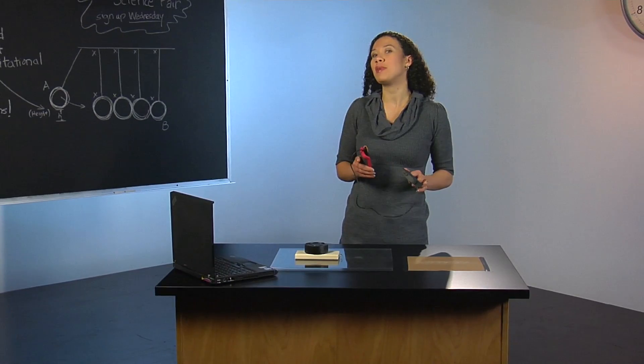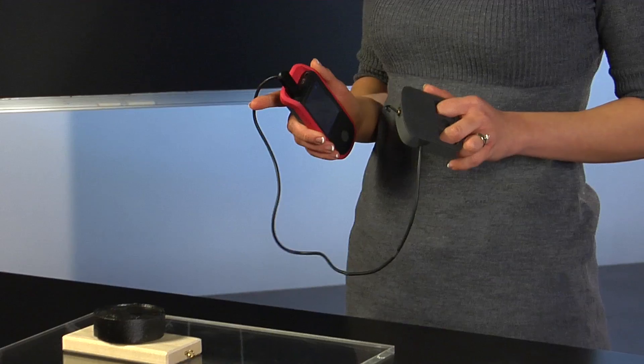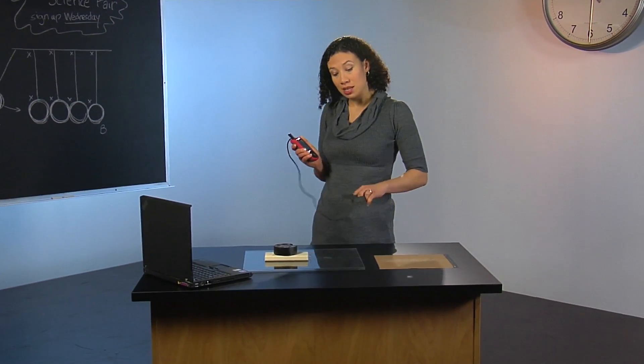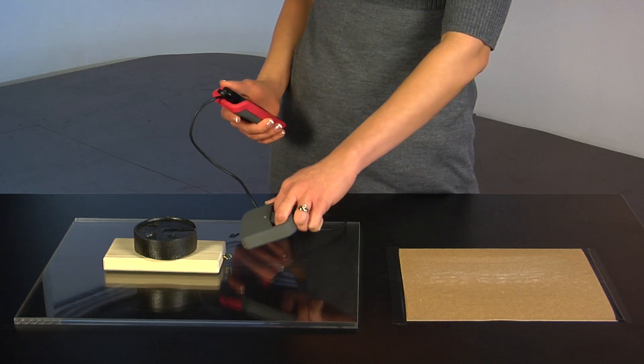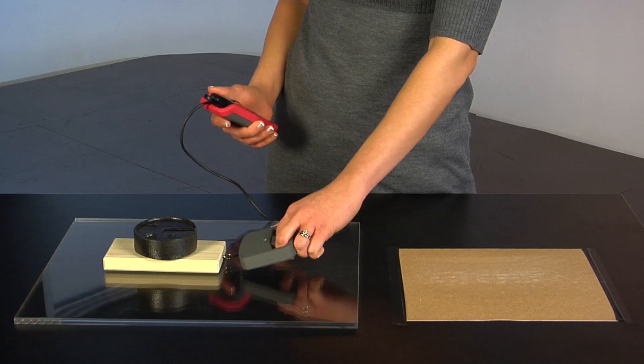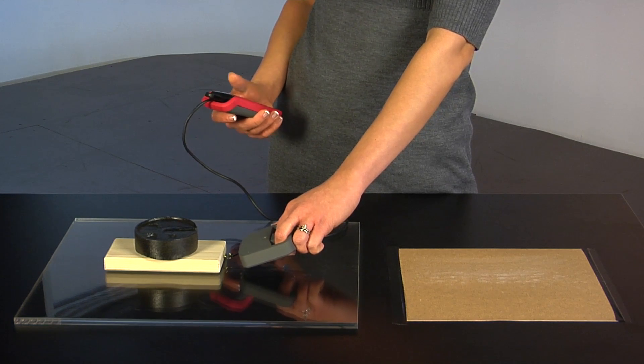We're showing friction by demonstrating the difference in force needed to pull a block across various surfaces. So, I'll start with the acrylic. Simply hook up the force sensor to the block, press record, and pull.